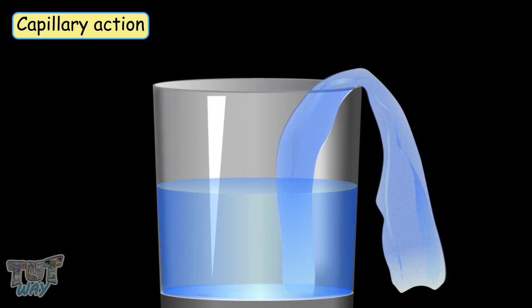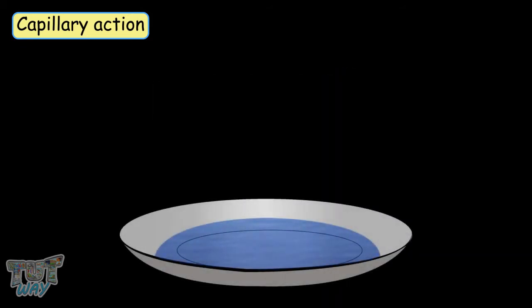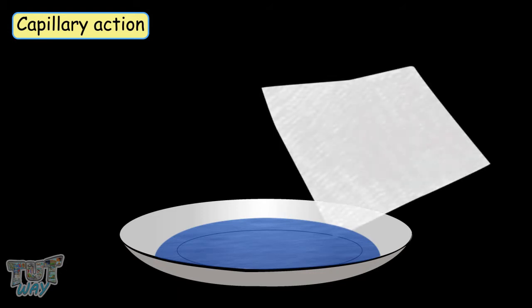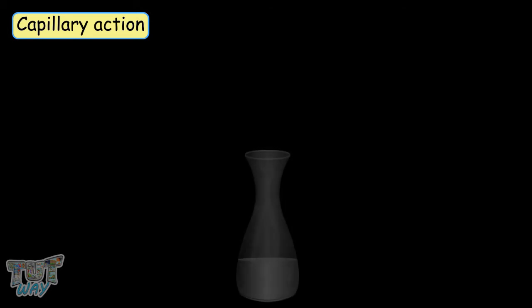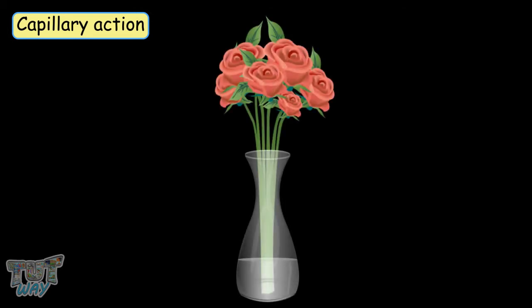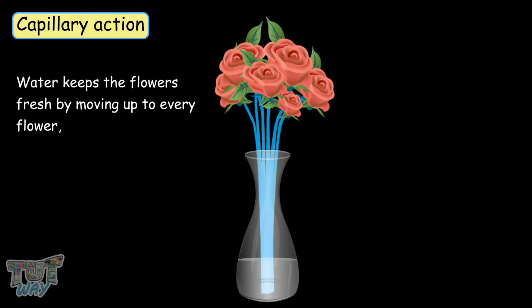You can also take a small amount of colored water and put it in a plate, then dip a tissue from its edge, but the colored water will still travel up. So this is also called capillary action. Here we have another example. We often cut flowers in a vase of water and the water keeps them fresh by moving up to every flower. This is also due to capillary action.